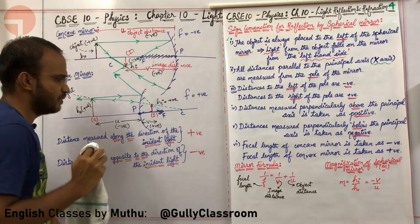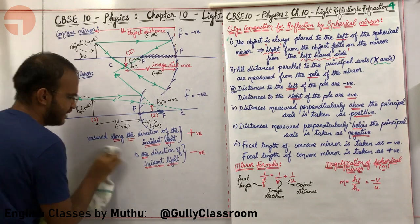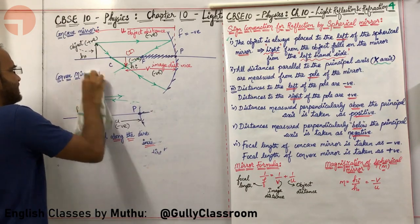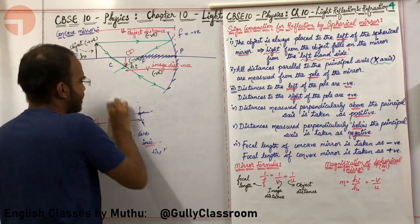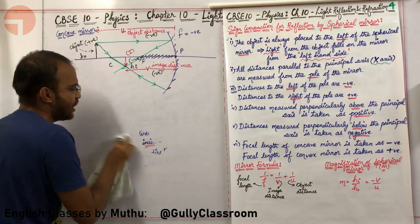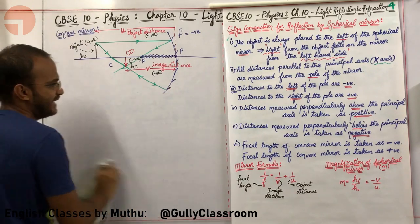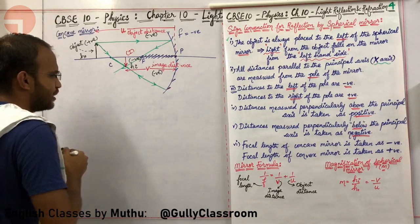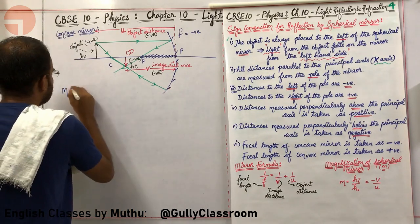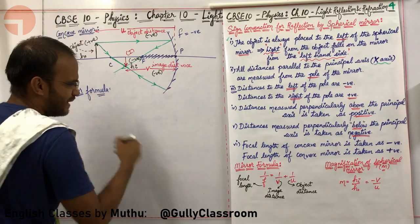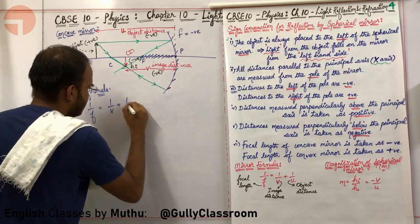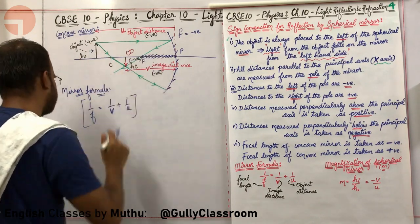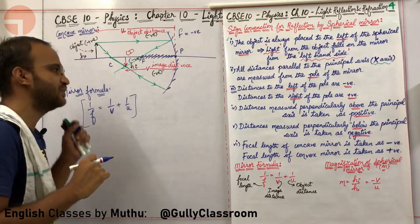Now let us understand the mirror formula. We learn the formula in 10th standard, but the derivation using simple geometry and similar triangles is studied in 12th standard Physics, Unit: Ray Optics. The mirror formula is: 1/f = 1/v + 1/u, where V is the image distance, U is the object distance, and f is the focal length of the mirror.